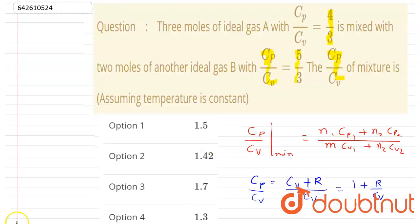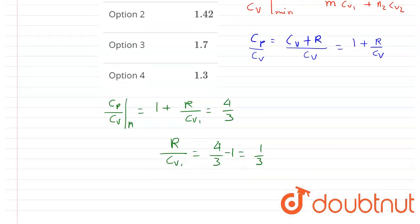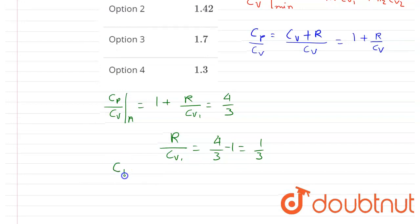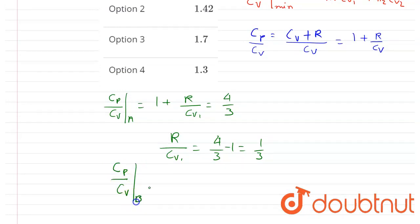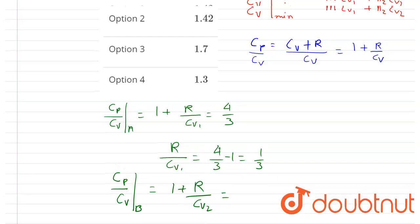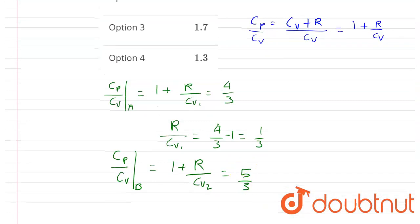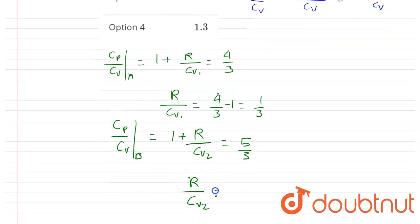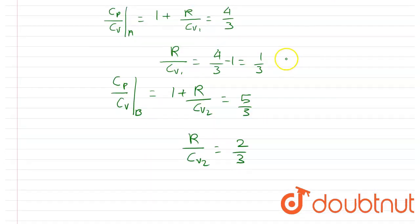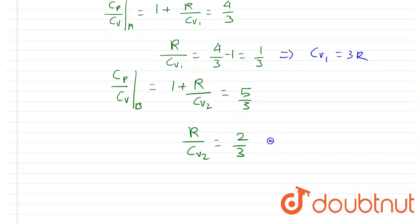For gas B, cp/cv = 5/3. So 1 + R/cv2 = 5/3, giving R/cv2 = 5/3 − 1 = 2/3, which means cv2 = 3R/2. So from both equations we get cv1 = 3R and cv2 = 3R/2.